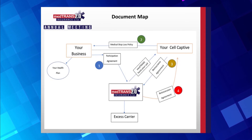The reinsurance agreement is the agreement that shifts 100% of the eligible medical stop-loss risk to MedTrans, and the retrocession agreement is the agreement that establishes how the MedTrans participants share in the risk of each participant in the employer-funded benefit plan and delineates the release of the underwriting profits back to the cell captives.